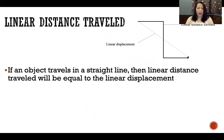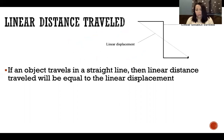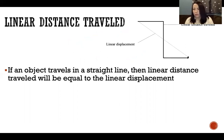If an object travels in a straight line — say I go out my front door and walk a mile in a straight line — then the linear distance traveled, one mile, will be exactly the same as the linear displacement, also one mile. But the linear displacement specifies the direction. So maybe I walked a mile east: a mile is the linear distance traveled, and that equals one mile east, which is the linear displacement.